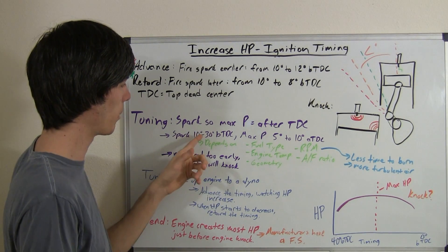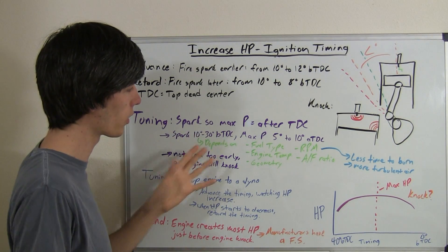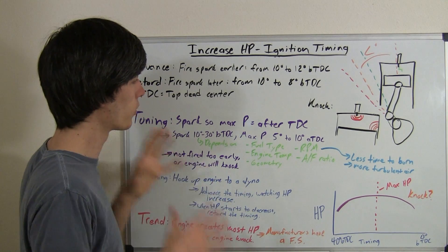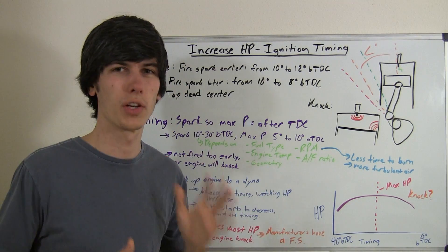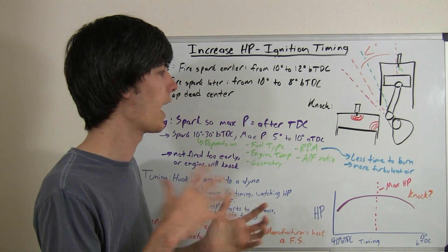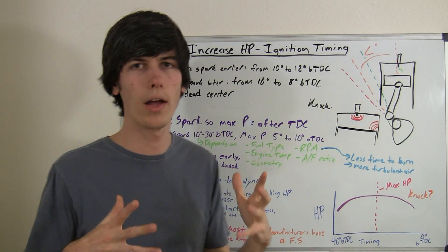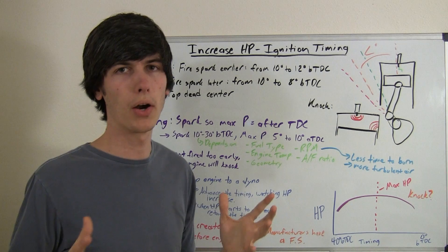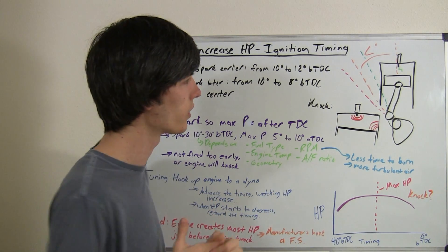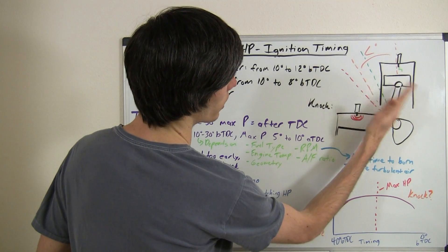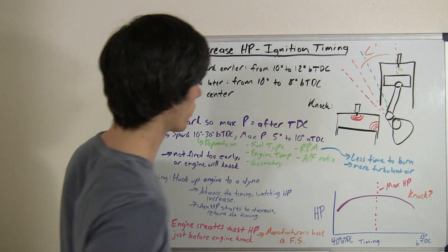So that occurs basically between 10 to 30 degrees before top dead center is when you're going to want to fire it, so that your maximum pressure occurs at about 5 to 10 degrees after top dead center. Now you're going to want the entire mixture to be burned almost completely by about 15 to 20 degrees after top center. So after that, it's already come down here and the piston is on its way down.